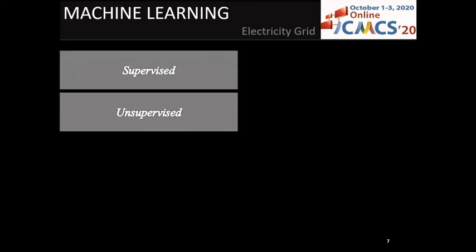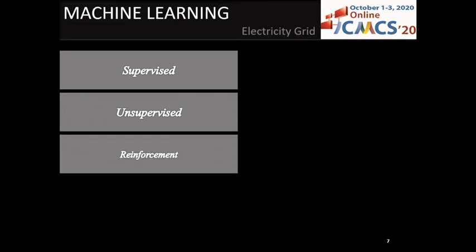Let's move on to present some essential concepts and strategies of machine learning. The main types of machine learning are supervised, unsupervised, and reinforcement machine learning. Some of the methods include regression, classification, clustering, and so on.